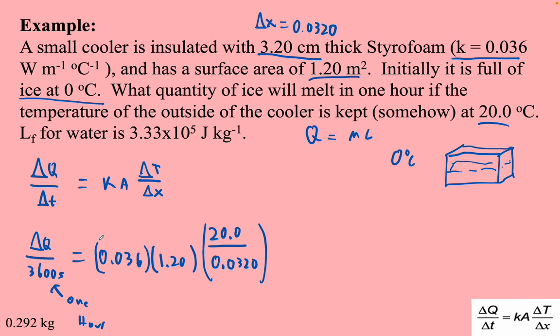Now we can solve this for the Q. So Q is literally going to be 3600 times 0.036 times 1.2 times 20 divided by 0.032. My Q that flows into the cooler is going to be 97,200 joules.